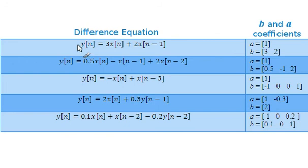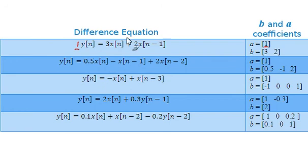In the difference equation, I haven't explicitly shown it, but I could put a value of 1 in front of the Y term. It's that value of 1 that corresponds to the 1 value in the A vector. The B coefficients are associated with the X terms — the X(N) term has a coefficient of 3, and the X(N-1) term has a coefficient of 2, corresponding to B coefficients of 3 and 2.